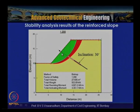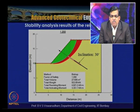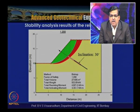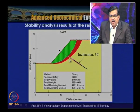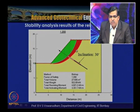The similar configuration was analyzed with an anchor inclined at 30 degrees. The factor of safety improved to 1.2. The presence of the anchor enhances stability: the total resisting moment exceeds the total activating moment, and the slip surface shifts away from the face of the slope.